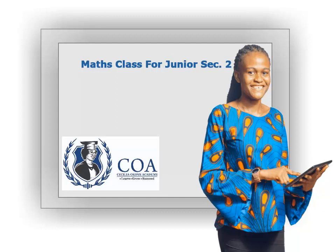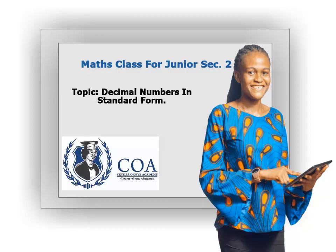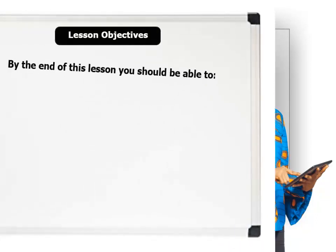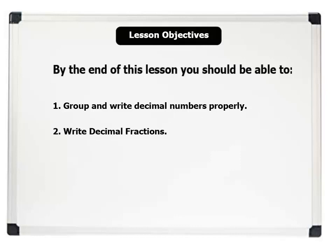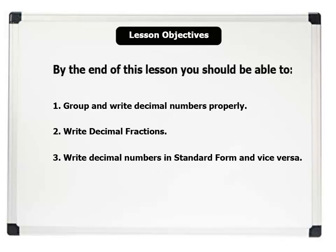Welcome. The topic of this lesson is decimal numbers in standard form. Lesson duration remains 5 minutes. Let's see our lesson objectives. By the end of this lesson you should be able to: 1. Group and write decimal numbers properly. 2. Write decimal fractions. 3. Write decimal numbers in standard form and vice versa. Let us now proceed.